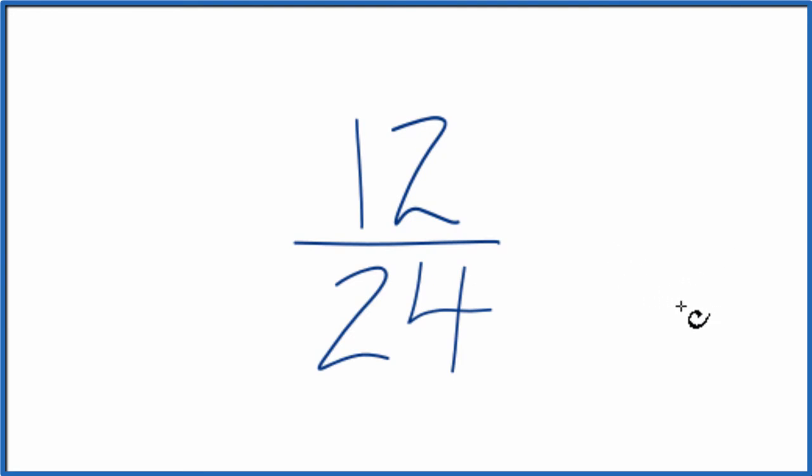To do that, we need to find a common multiple. I can see right away that 12 goes evenly into 24. 2 times 12 is 24.